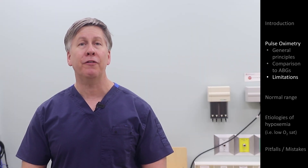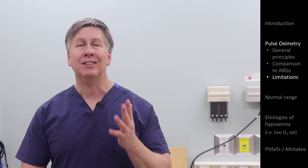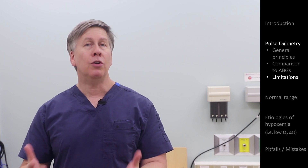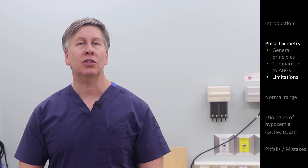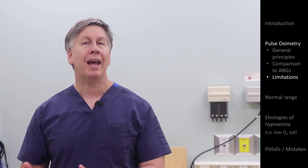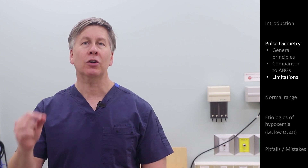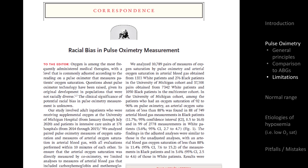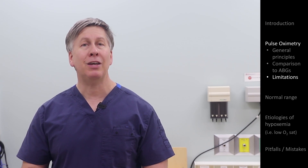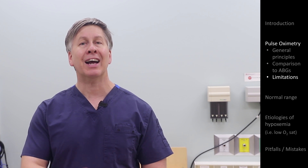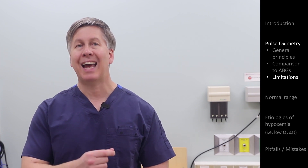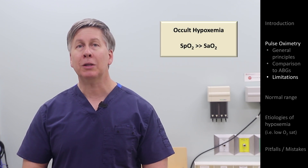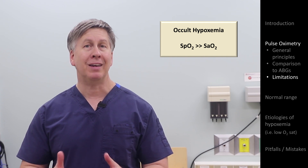One of the aforementioned issues deserves additional attention — the impact of skin pigmentation on accuracy. Although it had been known beforehand, widespread appreciation did not happen until 2021, when both traditional and social media picked up on a research letter published in the New England Journal of Medicine. What that letter described is that, compared to white patients, black patients were more likely to have SpO2 measurements significantly higher than the simultaneously measured SaO2. This phenomenon, known as occult hypoxemia, can result in black patients not receiving supplemental oxygen despite it being indicated.